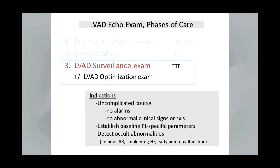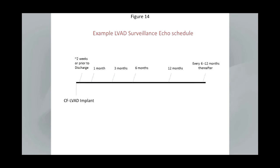Let's go on to the surveillance echo exam, which is indicated when the course is uncomplicated, there are no alarms, and no abnormal clinical signs or symptoms. This can be useful to establish baseline patient-specific parameters and to detect occult abnormalities. Sometimes patients are doing well with no alarms, but some things can be brewing — such as de novo AR that forms during the course of LVAD support, particularly if the aortic valve is not opening, smoldering heart failure in active patients, and early pump malfunction. We recommended that a program for periodic LVAD surveillance be undertaken in your lab.